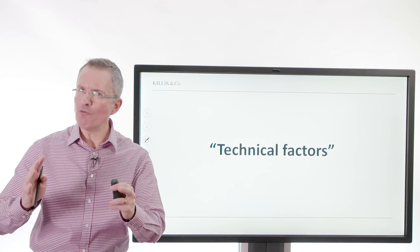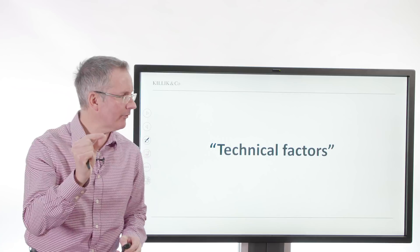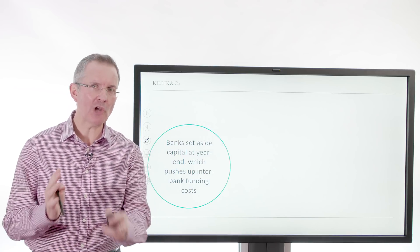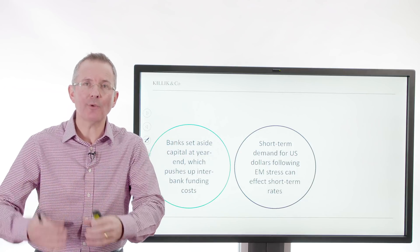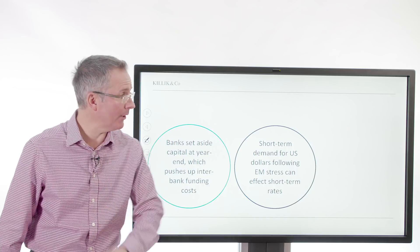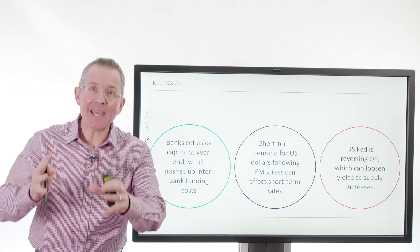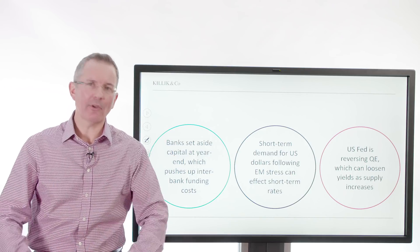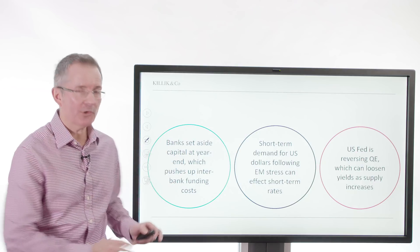Then there are the technical factors. People who don't read too much into an inverted yield curve would say there are some short term technical reasons why, at the short end in particular, you've had a squeeze on yields — the spread, the gap between yields. Those include banks setting aside capital at the year end, which can push up bank funding costs and change the shape of the yield curve temporarily. Short term demand for US dollars following emerging market stress can affect short term rates — we've seen trouble in emerging markets over the course of 2018. And the US Fed is reversing QE, doing quantitative tightening, and depending on which type of IOU they target for that tightening process, that will alter the shape of the yield curve. So these factors may not result in a recession — it's simply things going on around the edges which can influence the way the yield curve looks.